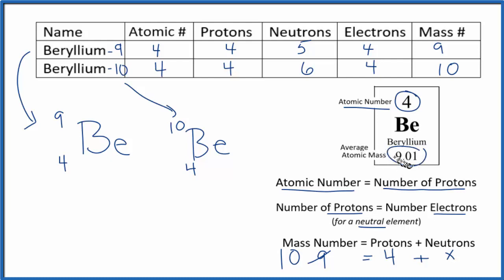That's the average atomic mass. So a mass number is going to be a whole number. Your average atomic mass will have a decimal. It'll be a weighted average. So this is Dr. B with the number of protons, neutrons, and electrons, and the mass number for beryllium. Thanks for watching.